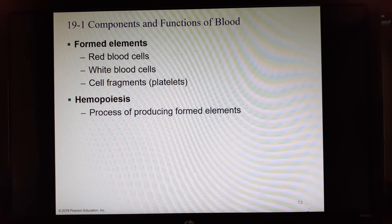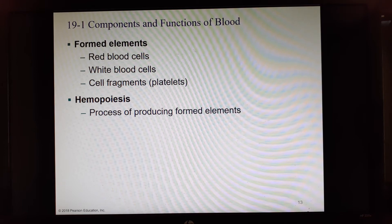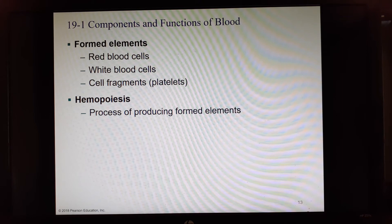Blood doesn't have fibers like other connective tissues; instead it has formed elements called erythrocytes, leukocytes, and thrombocytes — also known as red blood cells, white blood cells, and platelets. We'll primarily use the proper terms. Thrombocytes are pieces that break off a giant cell called a megakaryocyte and combine with fibrin threads to create blood clots.